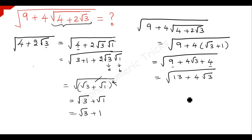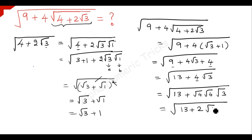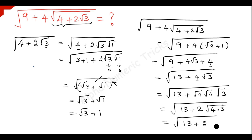So we have 13 plus 4 root 3, and we need to complete the square to get the answer. For that, we write 4 as root 4 times root 4, so 4 root 3 becomes root 4 times root 4 times root 3. Since root 4 is 2, we get 13 plus 2 times root 4 times root 3, which equals 13 plus 2 times square root of 12, since 4 times 3 is 12.